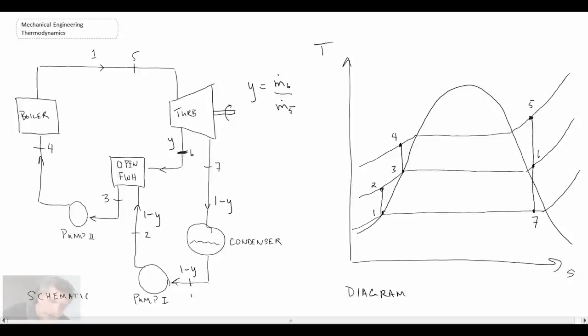And then you'll notice that when we come into our open feed water heater, we have fluid at y and 1 minus y. Those come together and based on the way that we've defined the mass flow rate, when we exit there we come back to 100% of the mass flow rate. So we then show, I'll put a little 1 here, don't get it confused with state 1, but it's denoting the fact that we're back at 100% mass flow rate.